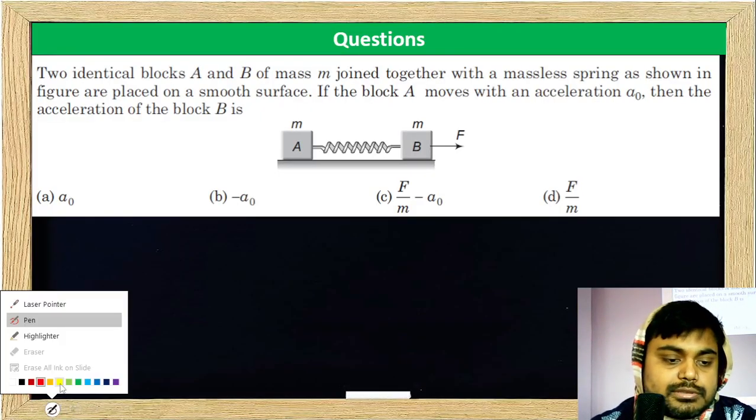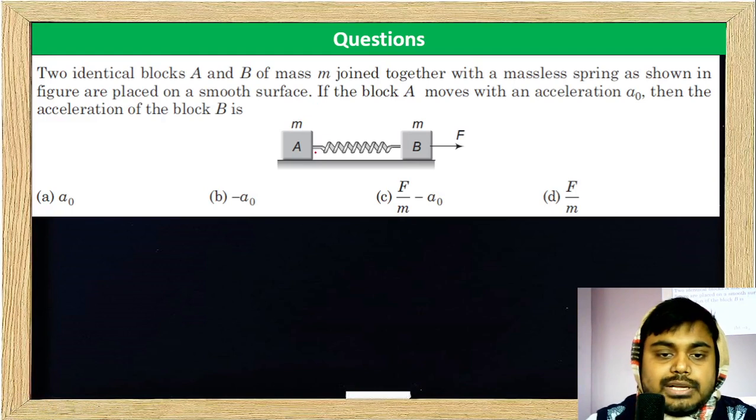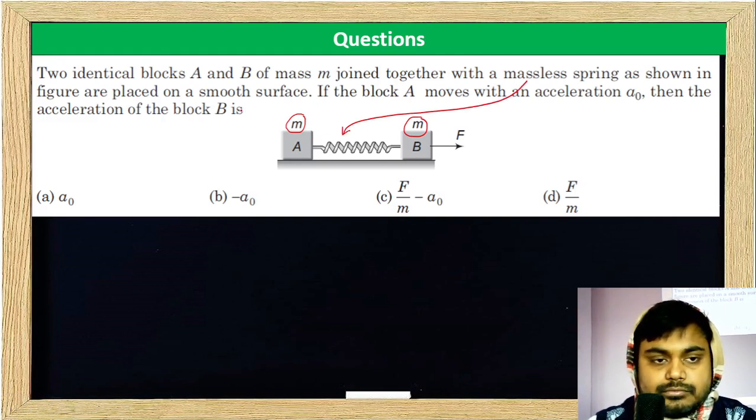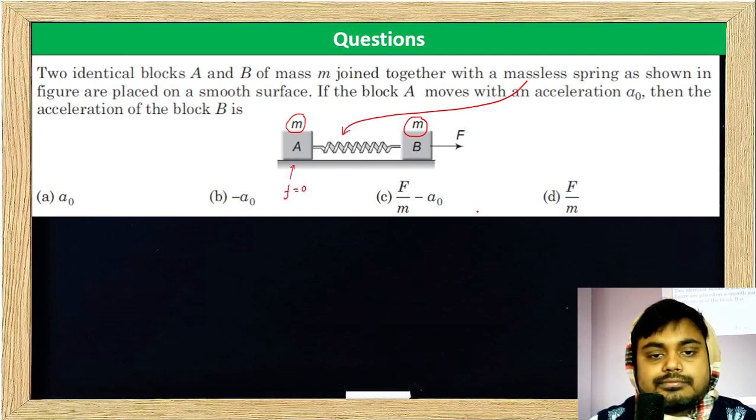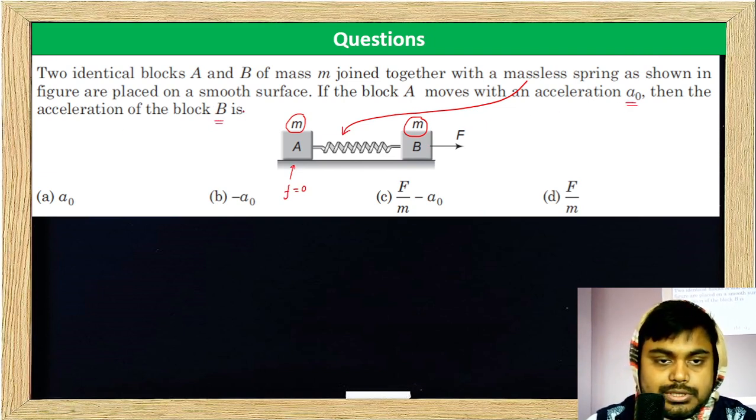Two identical blocks A and B of mass M joined together by a massless spring are placed on a smooth surface. Friction F is zero. If block A moves with an acceleration A₀, then the acceleration of block B is...